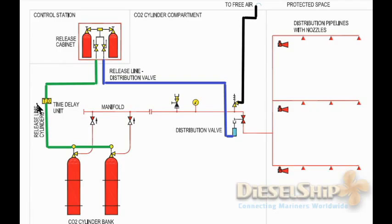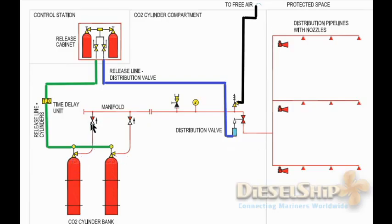Electronically, we have a solenoid valve and a timer mechanism which, after 20 seconds time delay, opens the solenoid so the CO2 goes and opens the main cylinder unit. As the chief engineer opens the main distribution valve, a limit switch gives an indication that the valve is opened. After the time delay, the main CO2 bottles for the engine room are also opened. CO2 passes through the non-return valve — each cylinder outlet has a non-return valve — reaches the main manifold, and through the distribution valve goes to the engine room, distributed to various nozzles on various platforms.